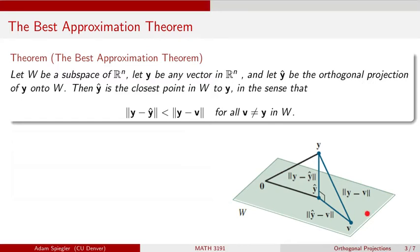What I mean by that is: if we consider this subspace W as our model, and I have an output value which is the actual value, and I have some inputs into my model, the output of this model we can find in this subspace W. Given some output y, we want to find the best approximation that our model gives us — some vector that sits in this subspace W. This y-hat is what we're going to call the best approximation for the vector y.